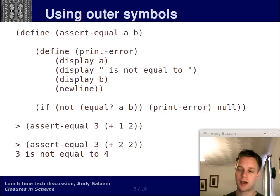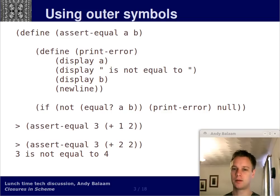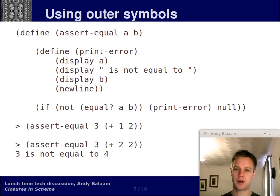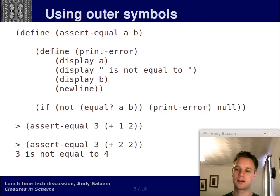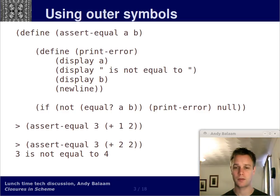Now let's look at what printError is. Scan upwards to where it says define printError. That means define a function called printError which doesn't take in any arguments at all — hence why the bracket closes immediately after the word error. The body of that function is display a, then display 'is not equal to', then display b, then newline. Display just means print — it means print out to the console the value of the thing. The first and third — a and b — print out values. Notice that those values have not been passed into this function. printError doesn't take any arguments, but printError is able to access symbols defined in the function that contains it. If you define a function inside a function, the inner function can access the symbols of the outer function.